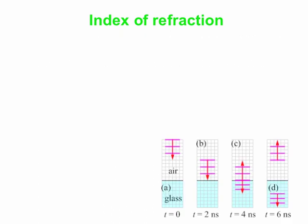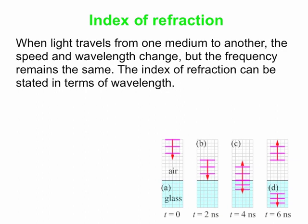Here we have a beam of light shining down on an air-glass interface — the glass is shown in blue, the air in white. The purple things in the beam are wave fronts, the peaks of the waves. When any kind of wave experiences a change in medium, the frequency is the one thing that remains the same — out of frequency, speed, and wavelength, frequency stays the same.